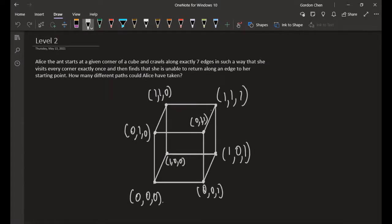Okay, Level 2. Alice the ant starts at a given corner of a cube. We'll just put it as a unit cube, which is a cube with side length one, and we put it on the coordinate plane.